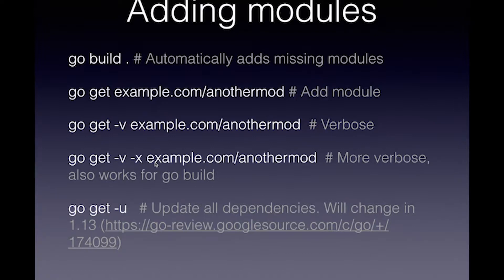You can occasionally find out if there was an issue with the version number. There's also a way you can update your existing modules, which is currently go get -u. This will change in version 1.13 — the -u will mean only update for the current package you're in, and if you have multiple packages only for that one.